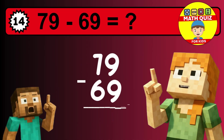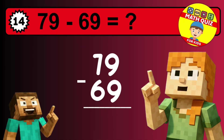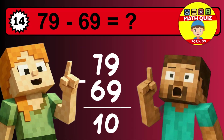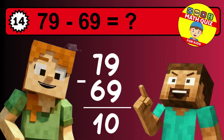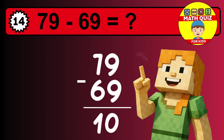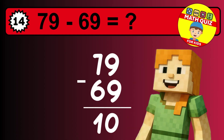Let's solve this step by step. We start with the units: 9 minus 9 is 0. Then we go to the tens: 7 minus 6 is 1. The final answer is 10.